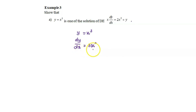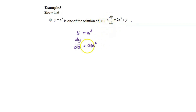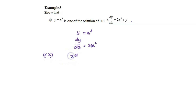The derivative function needs to be multiplied with x so that we can obtain the coefficient x for the term dy over dx. Multiplying by x gives us x dy over dx equals 3x cubed.